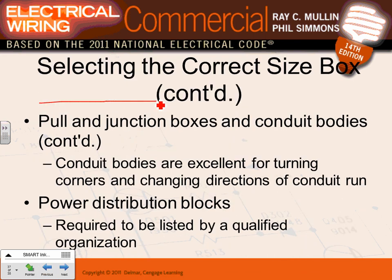Pull boxes: you use a pull box when pulling a long feeder - say 100 to 400 feet - between two buildings, putting a pull box in between to make pulling conductors easier. Also, if you have more than 360 degrees of bends in a conduit run, you must have a pull box. What makes a box a pull box? If you bring at least one conductor number four or larger into any box, that box changes from a junction box or device box into a pull box, and certain calculations are required to size it.